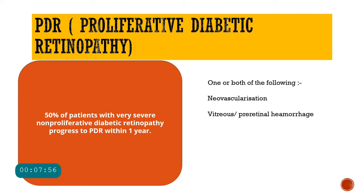Proliferative diabetic retinopathy — PDR — is characterized by the presence of neovascularization, or the manifestation of neovascularization such as vitreous or pre-retinal hemorrhage. About 50% of patients with very severe non-proliferative diabetic retinopathy will progress to PDR within about one year.